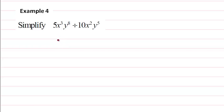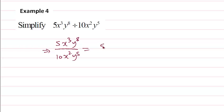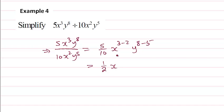Example four: because of division, we write 5x cubed y to the power 8 on the top, then 10x squared y to the power 5 on the bottom. So it's 5 divided by 10, x to the power 3 subtract 2, then y to the power 8 minus 5. So we get one-half, x to the power 1, and y to the power 3.